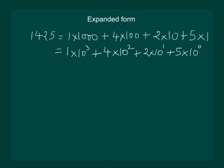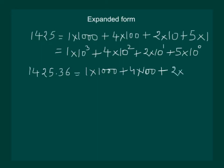Let us see what happens if this number has some decimal values as well. Say 0.36. Then the expanded form can be written as 1 into 1000 plus 4 into 100 plus 2 into 10 plus 5 into 1 plus 3 into 1 by 10 plus 6 into 1 by 100.